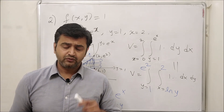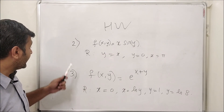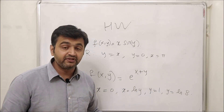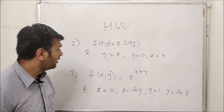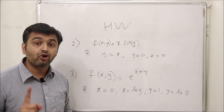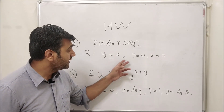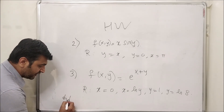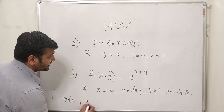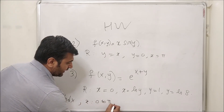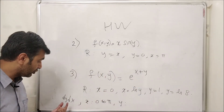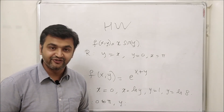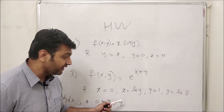Now let me give you some homework problems. Problem 2 is the second example above which I gave you the limits but didn't solve — find the volume using whichever order you like. Problem 3 is a new function and region. In your answer, write the order you chose, the limits of x, and the limits of y. If you can provide both orders, that would be excellent.